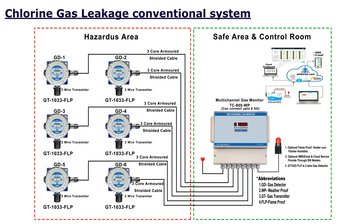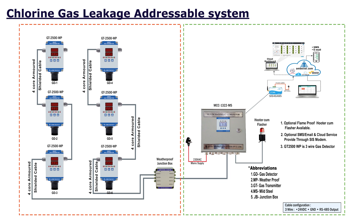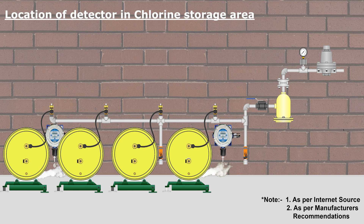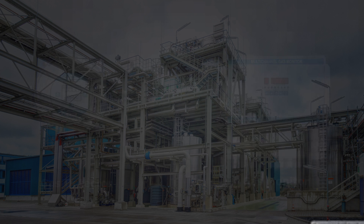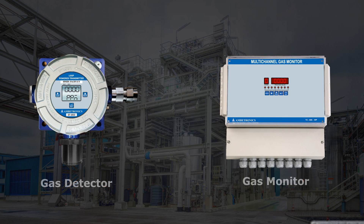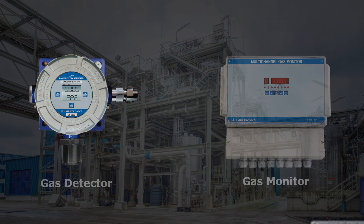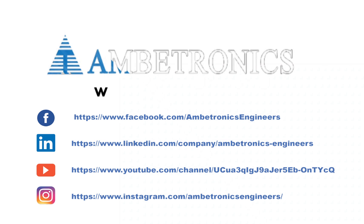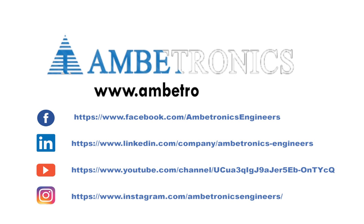The video illustrates the design of a conventional chlorine gas detection system and an addressable chlorine gas detection system. Chlorine gas detectors are generally installed at 6 inches from the floor. To protect your people and premises, use the Ambitronics chlorine gas detection system. For more information, visit our website.